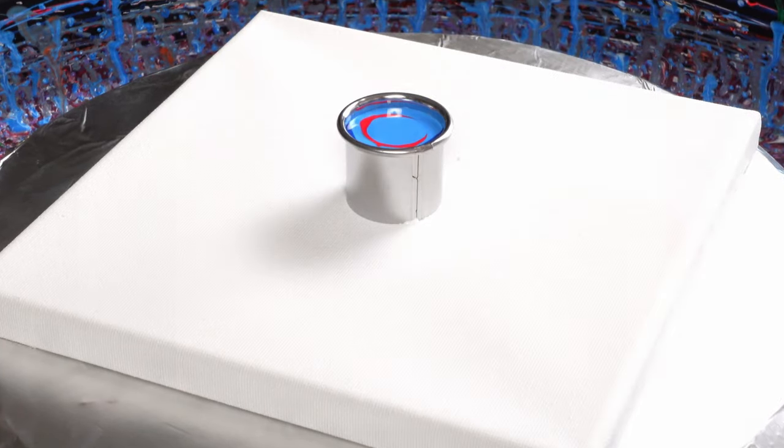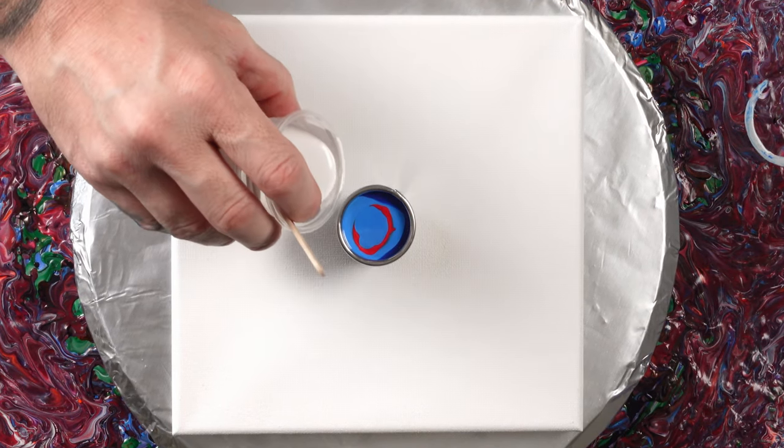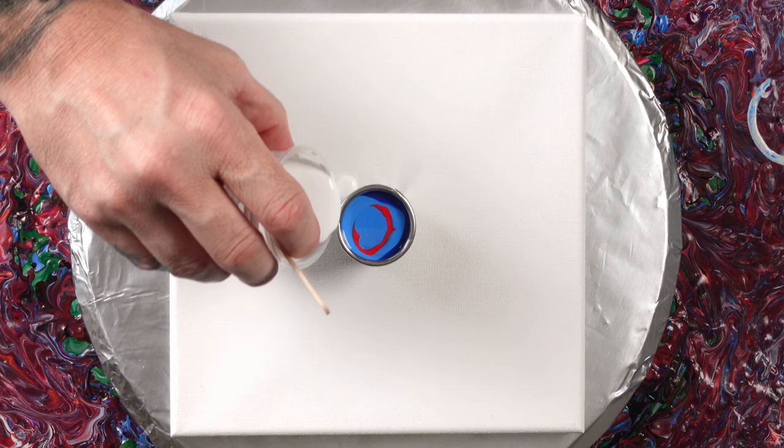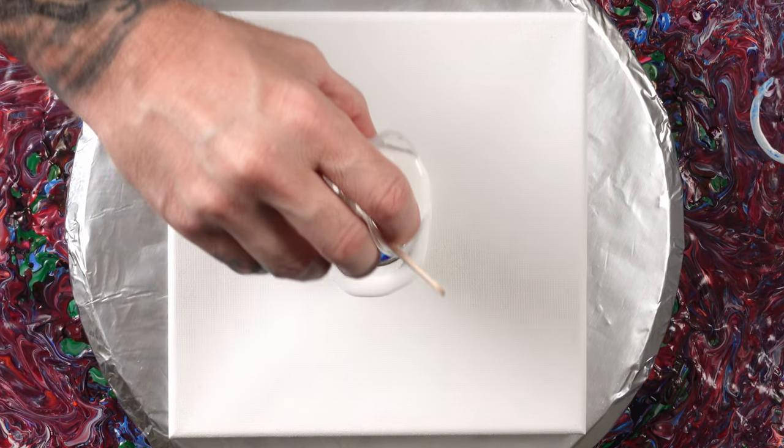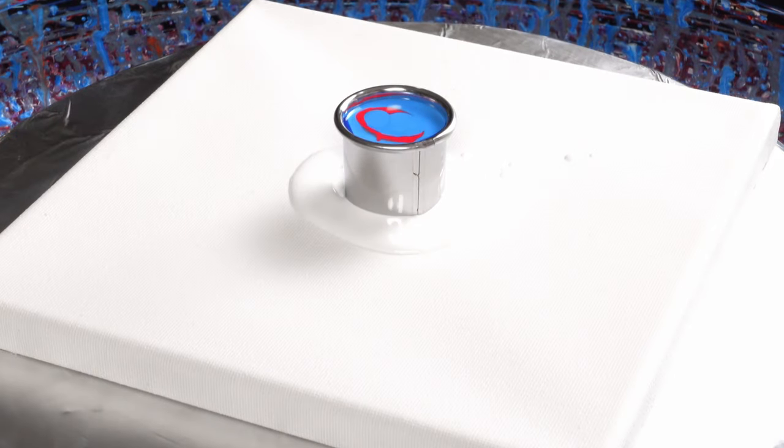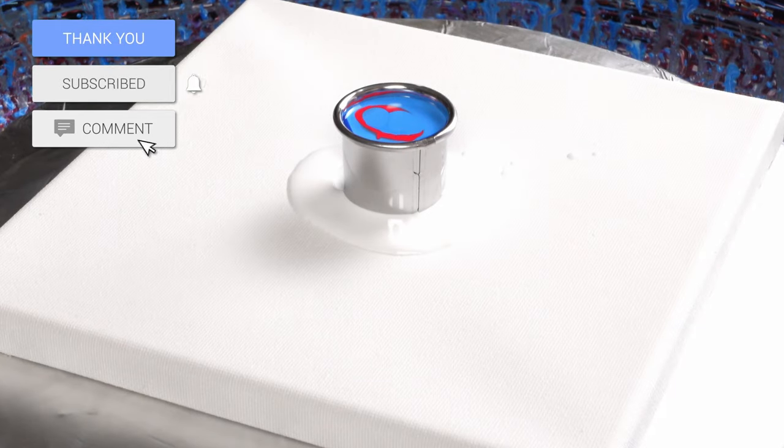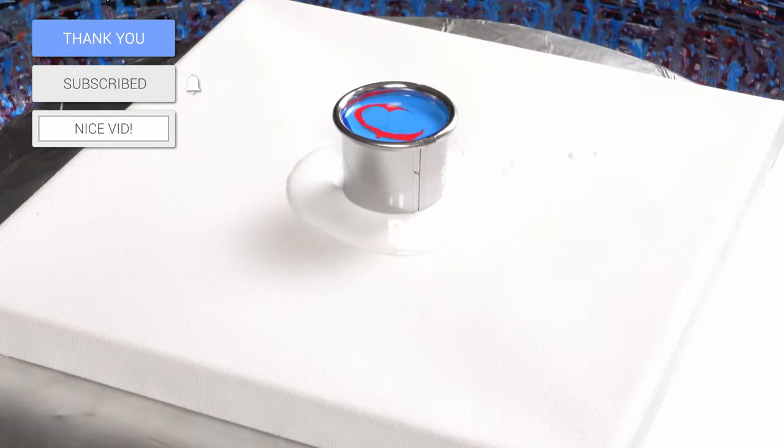One thing I forgot to do, I didn't put a little base coat around the edge. So now I will just take a little bit of white and do a small ring around. I like doing that because it lets the paint travel underneath that white, and then that white becomes the contrasting color on the top for the most part.